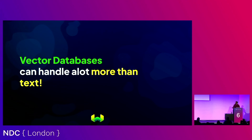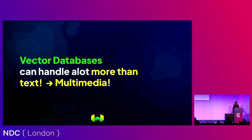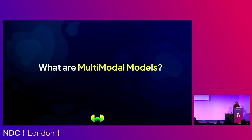The other place where a vector database comes in is if you need to search over multimedia. The example I showed at the beginning — putting in different phrases and retrieving audio files, video files, image files — if you want to search over multimedia, this is another great application of vector databases. To motivate searching over multimedia and how we enable this, let me start to talk about what multimodal models are. This is really the main point of this talk.